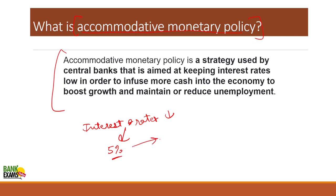For example, if the interest rate is 5 percent and a business like ABC Limited has a return on investment of 8 percent, they will take a loan. But if the interest rate increases to 10 percent, ABC Limited will not take the loan. As interest rates decrease, more people take business loans, educational loans, and consumer loans.